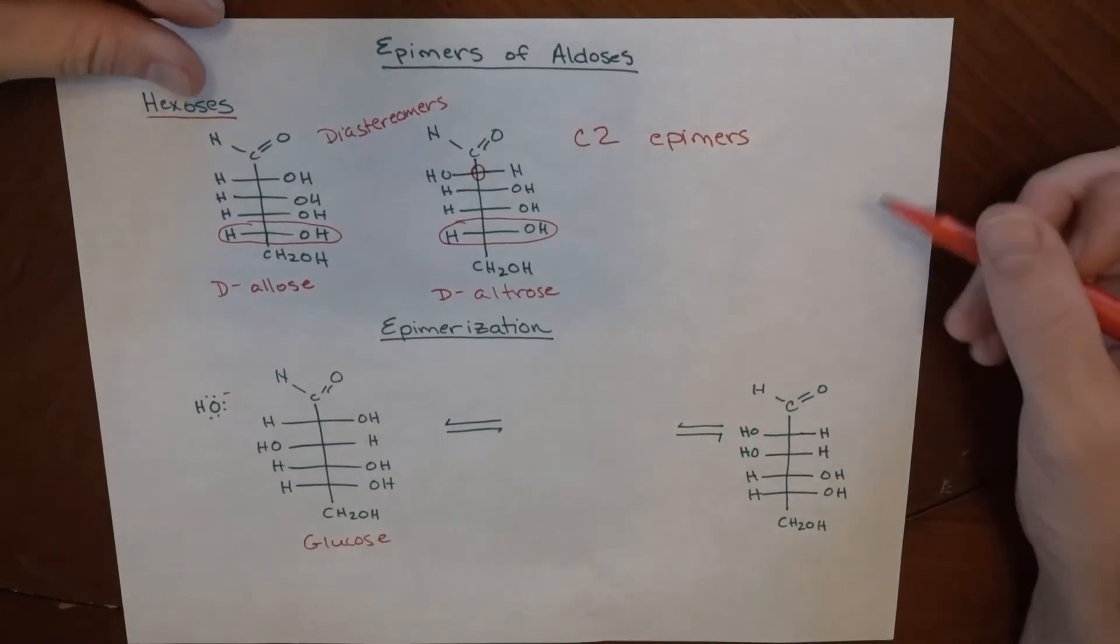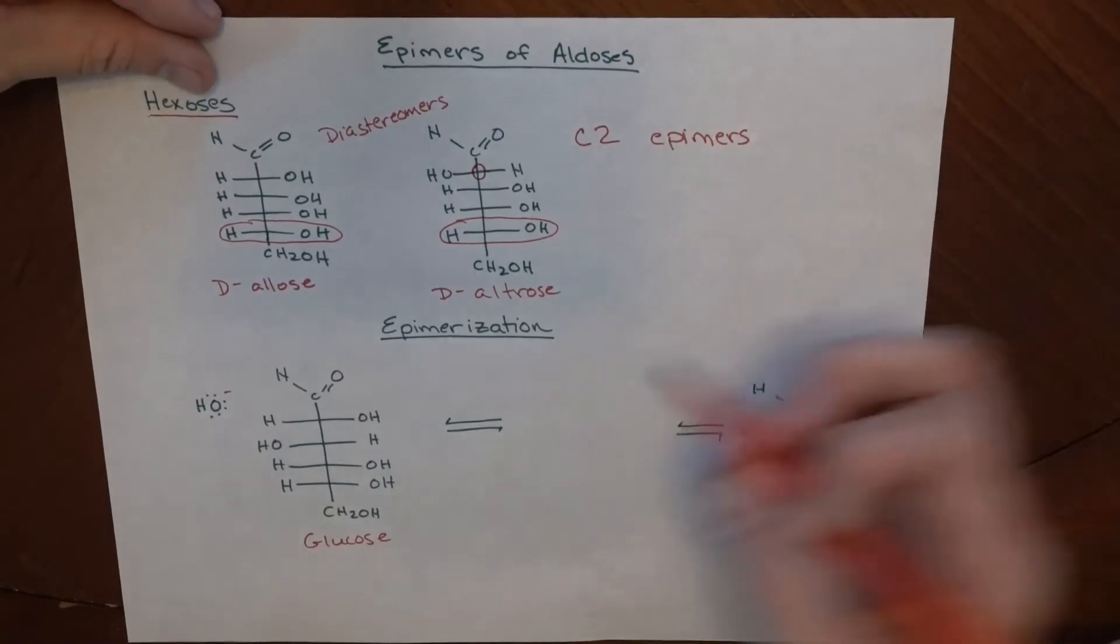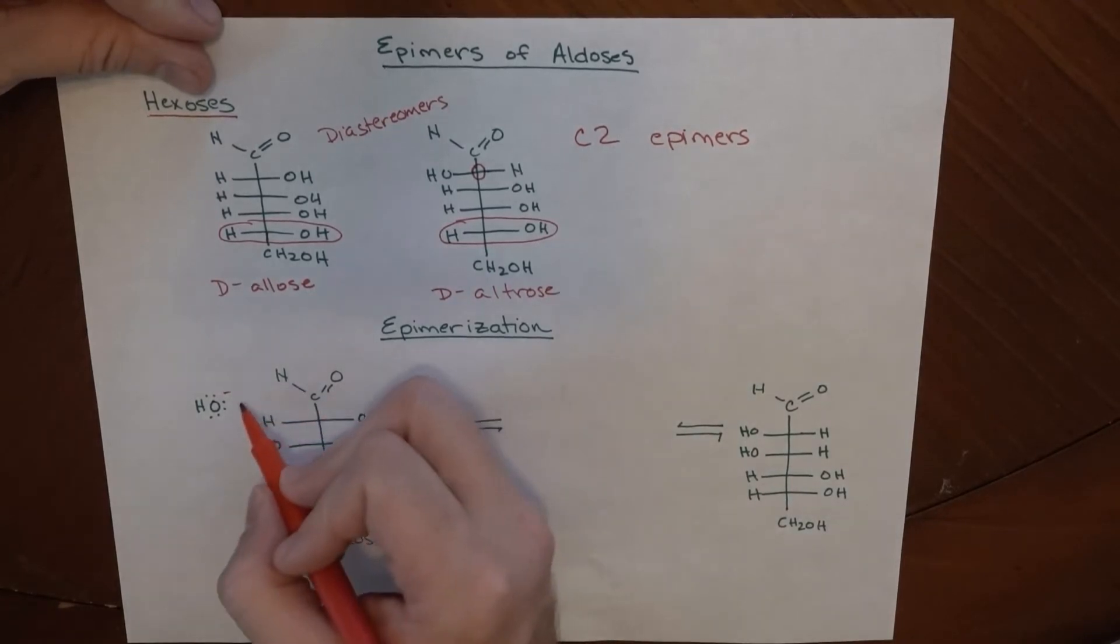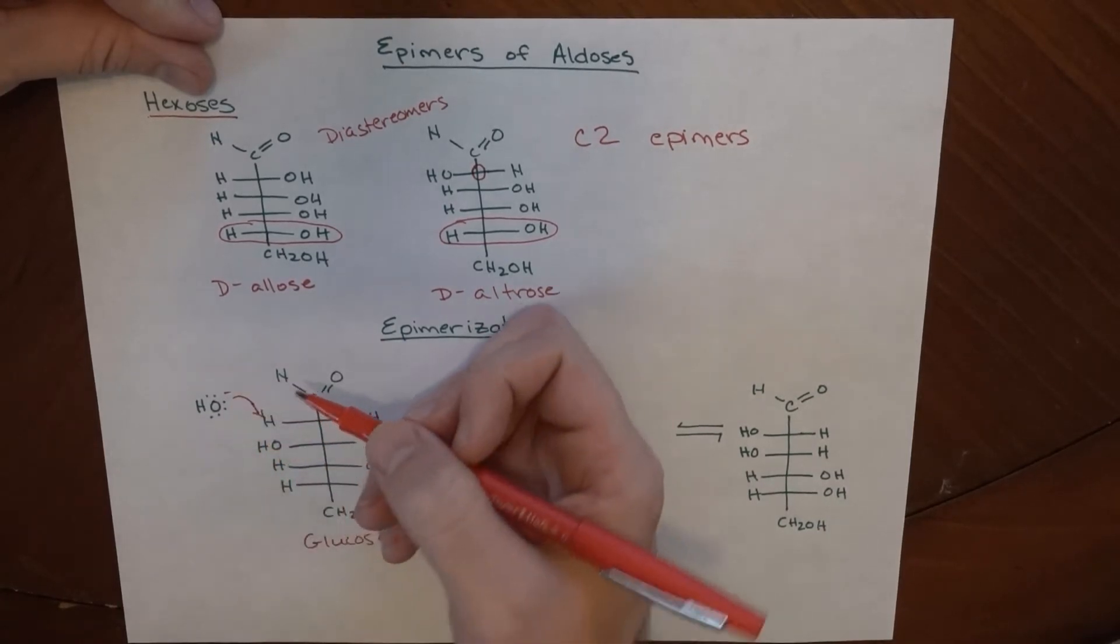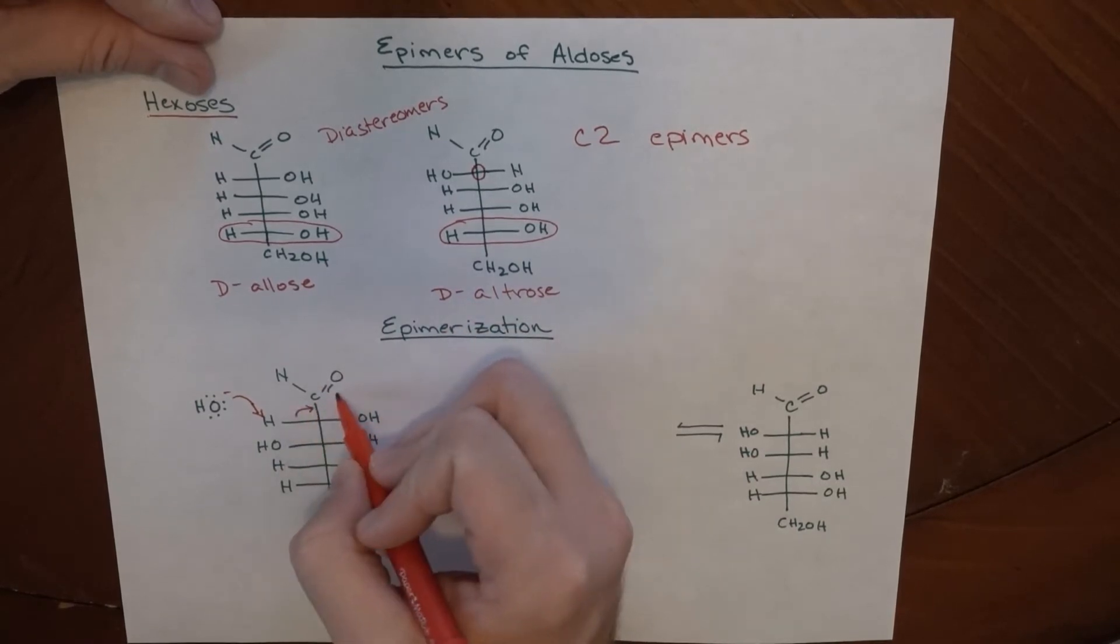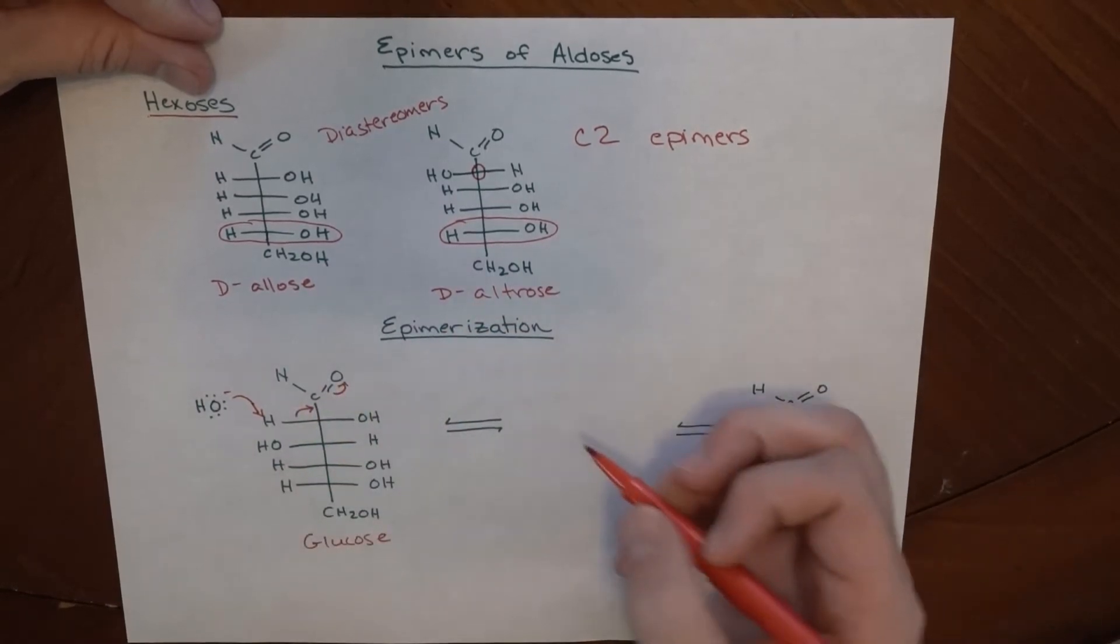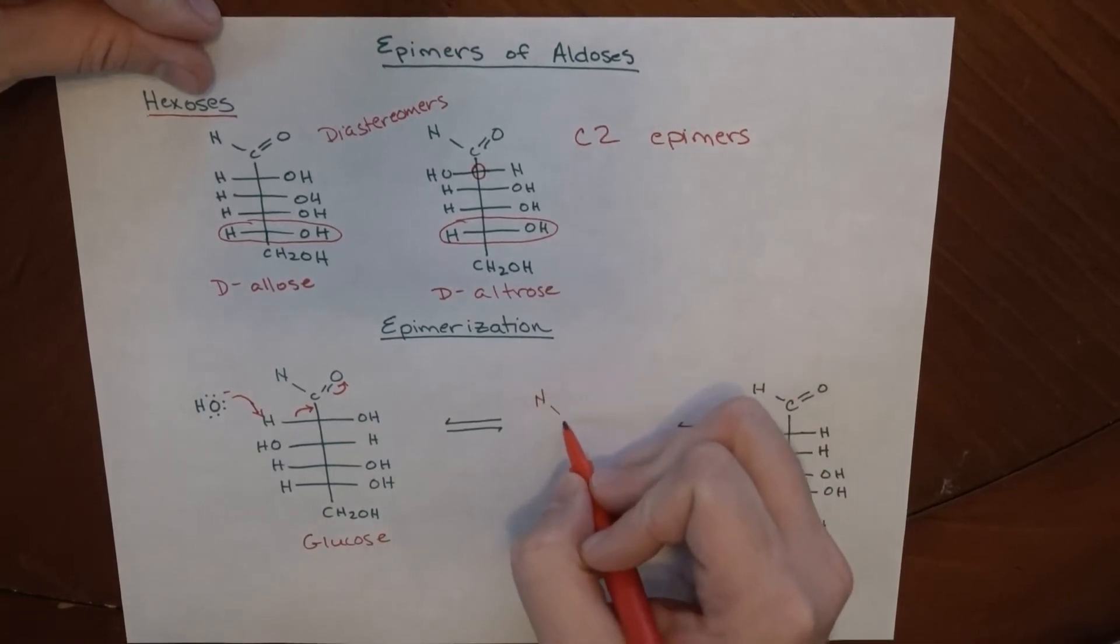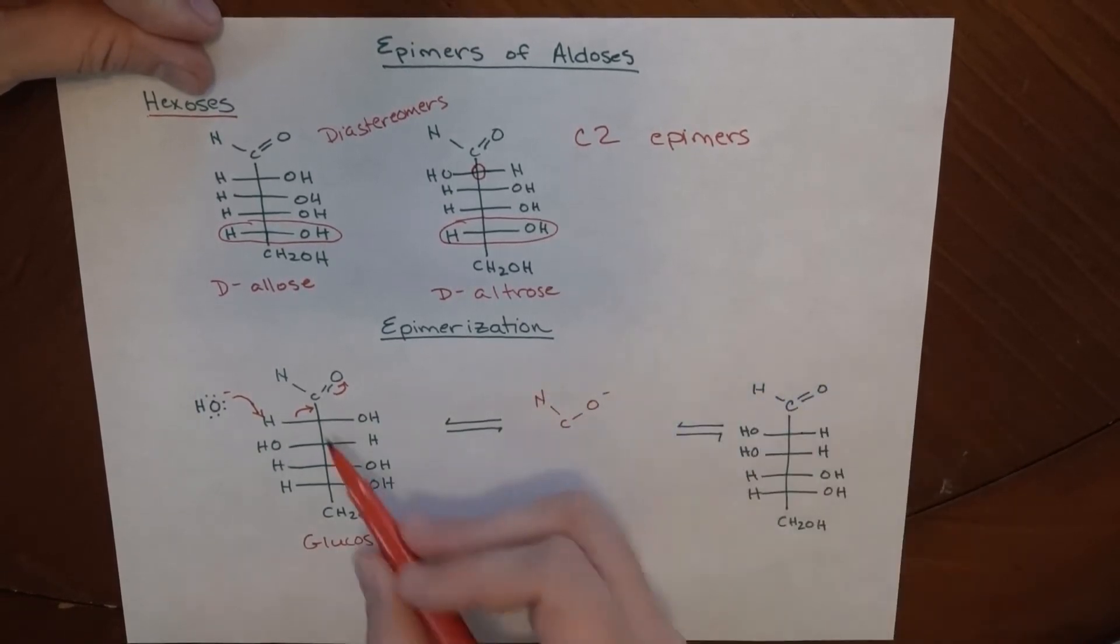So with this reaction here, we can actually have two epimers be in equilibrium with each other. So glucose right here, if a base were to grab onto this, and these electrons were to be brought here, and these electrons were kicked up here, then what we end up having is this.